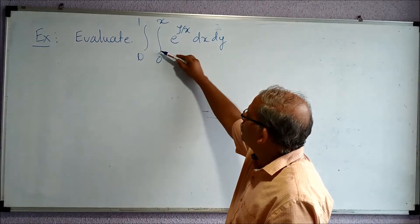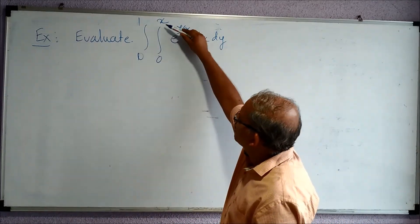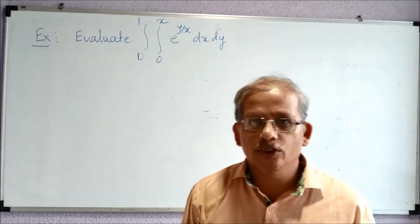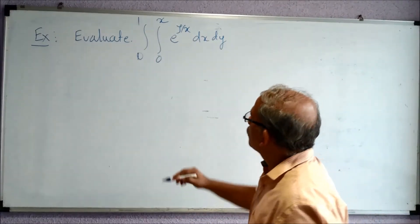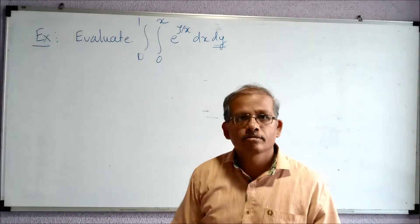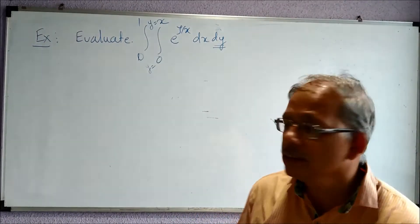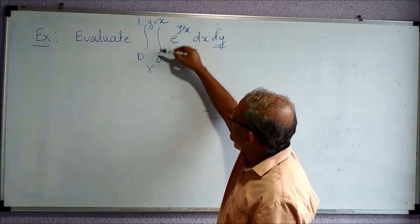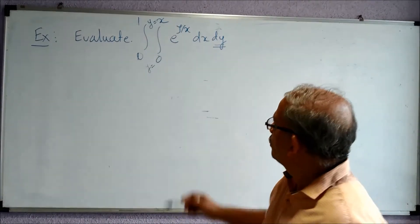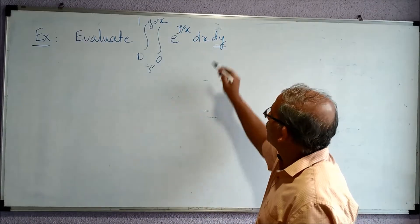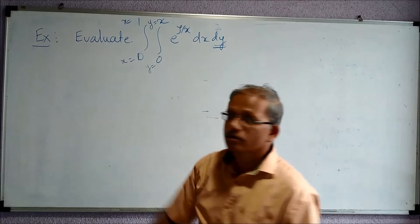Observe that the inner integration is from 0 to x. This is a hint: whenever x is involved in one or both of the limits of inner integration, the inner integration is always with respect to y. So I write this as y equal to 0 to y equal to x, and the integration is with respect to y. The remaining outer integration has to be with respect to x.